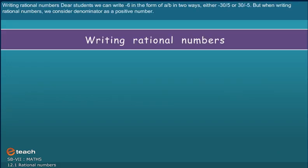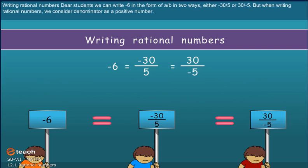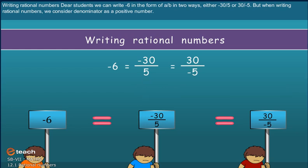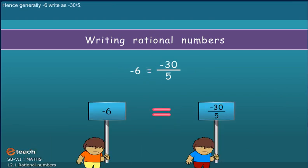Writing rational numbers. Dear students, we can write minus 6 in the form of a by b in the two ways, either minus 30 by 5 or 30 by minus 5. But when writing rational numbers, we consider denominator as a positive number. Hence, generally minus 6 write as minus 30 by 5.